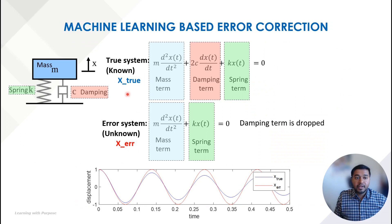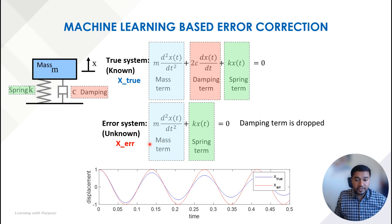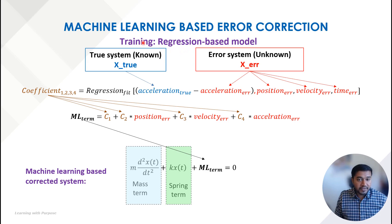The simulation model is unable to capture this conversion, so we proposed a machine learning based correction to improve our modeling. To explain how we are implementing the machine learning model, we use a spring-mass-damping system where we simulate two systems — one known and one unknown. For the known system we have the governing equation with mass, damping, and spring terms, while the unknown system has only mass and spring terms with no damping.